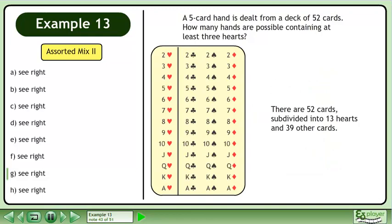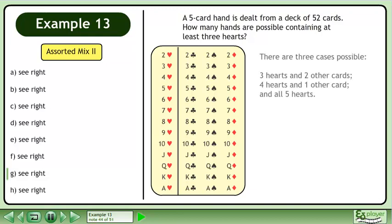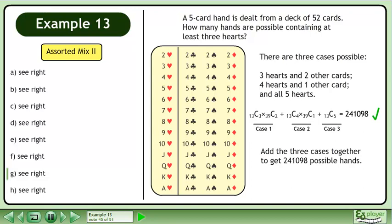Pause the video and organize the information about this question. There are 52 cards, subdivided into 13 hearts and 39 other cards. There are three cases possible. Three hearts and two other cards, four hearts and one other card, and all five hearts. Add the three cases together to get 241,098 possible hands.